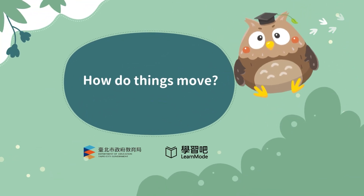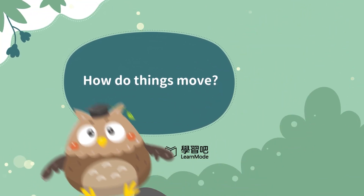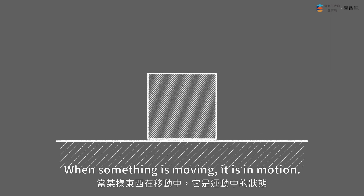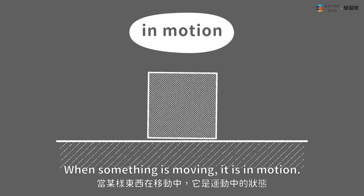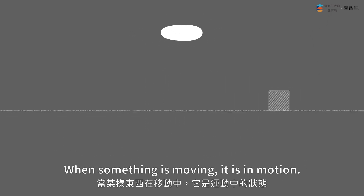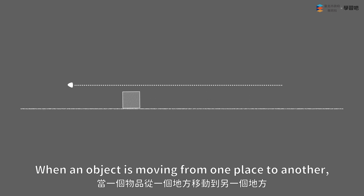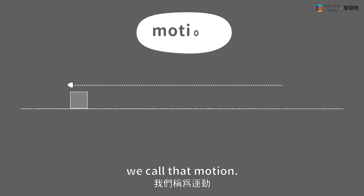How do things move? When something is moving, it is in motion. When an object is moving from one place to another, we call that motion.